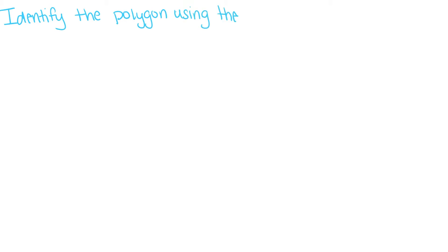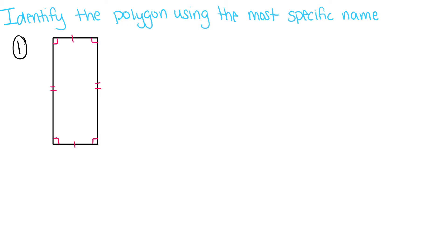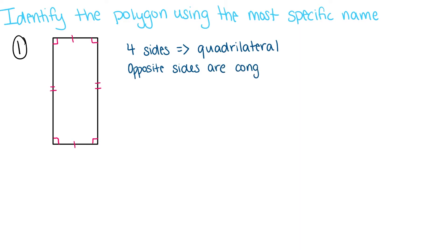Now let's look at some problems where we need to identify the polygon shown using the most specific name. Based on all of the criteria we've set, we want to make sure we're using the most specific name to define these polygons. First, we have this shape. This shape has four sides, which means it is a type of quadrilateral. Opposite sides are congruent, we have two pairs of congruent sides, and we have four right angles. So this means this must be a rectangle.